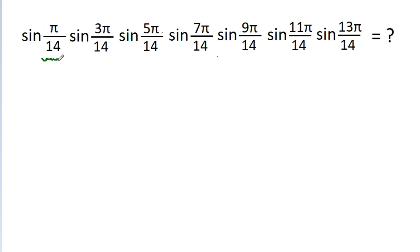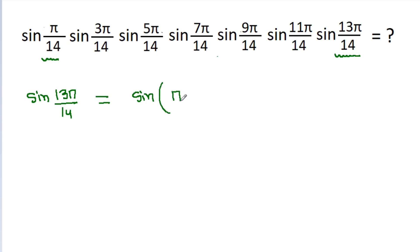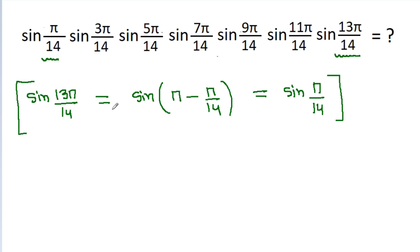So π/14 plus 13π/14 is π, and sin(13π/14) is equal to sin(π minus π/14). Since sin(π minus θ) equals sin(θ), it will be equal to sin(π/14). In the same way, sin(3π/14) will be equal to sin(11π/14), and sin(5π/14) will be equal to sin(9π/14).